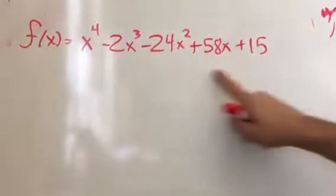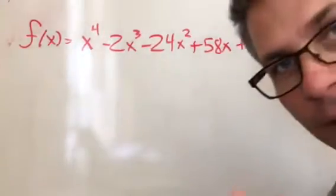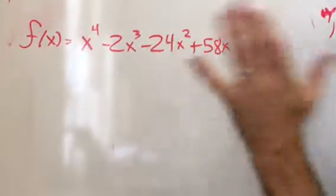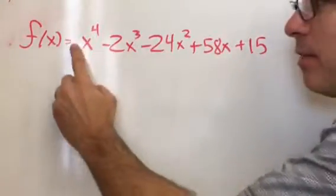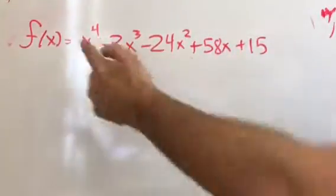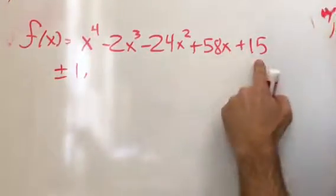Alright, so I want to find zeros of this function. One thing that I know is my zeros are going to be factors of my last term divided by factors of the coefficient of my first term. So since that's a 1, my possibilities are plus or minus factors of 15.